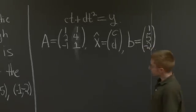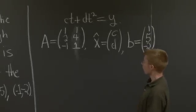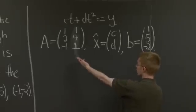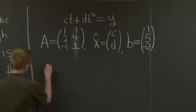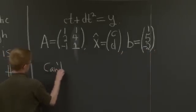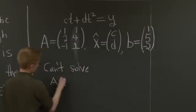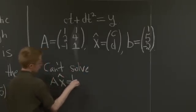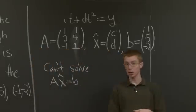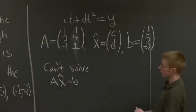So it would be great if we could solve Ax̂ = b, but we can't solve Ax̂ = b because there isn't a quadratic equation through the origin that contains these three points.